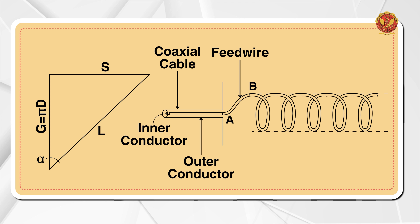अब आपके सामने एक figure है जो coaxial cable से start हुआ है। As we know, coaxial cable has an inner conductor and outer conductor. जो diagram में आ रहा है वो है coaxial cable, और उसके बाद inner conductor को ही हमने आगे extend किया है और उसी से पूरा antenna बनाया है। A और B के बीच का जो path है उसको हम बोलते हैं feed wire। Antenna start हुआ है beyond point B — तो B के बाद जो भी turns हैं वो हैं helical antenna के। B के पहले up to A क्या है — feed line है।